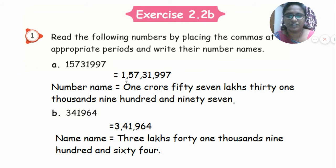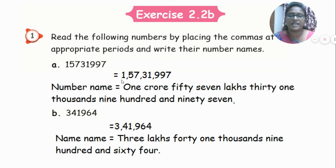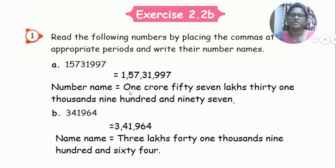Let's name this number: one crore, fifty-seven lakhs, thirty-one thousand, nine hundred and ninety-seven. Let's read one more time: one crore, fifty-seven lakhs, thirty-one thousand, nine hundred and ninety-seven.